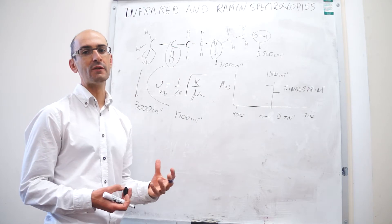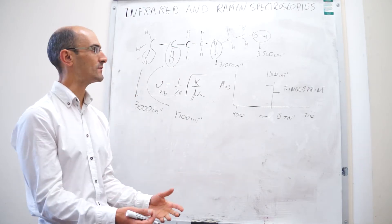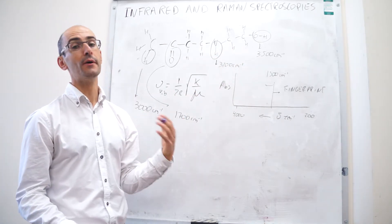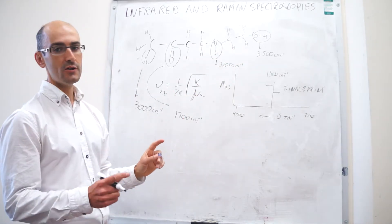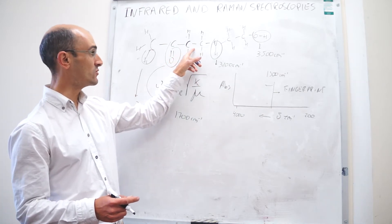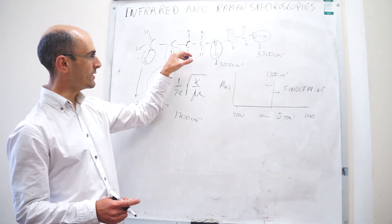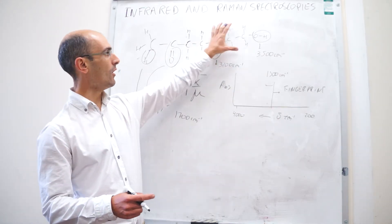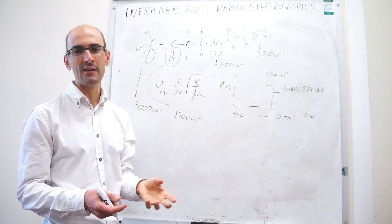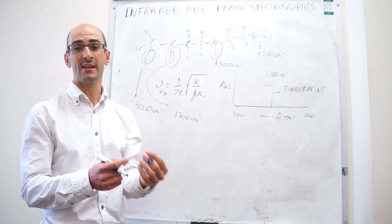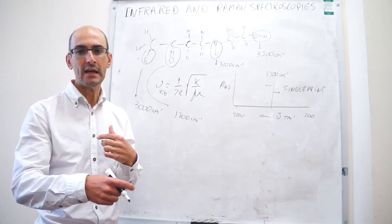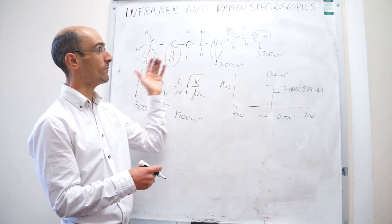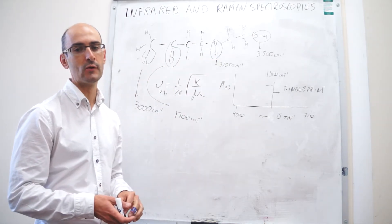Now, this technique is not going to be very useful in telling you the specific connectivity of the atoms. Notice that you have CH2s here and CH2s there. It's going to be impossible with infrared spectroscopy to tell exactly that you have two CH2 groups between a carbonyl and NH, another two between the NH and the OH. All of these groups will appear at about the same frequency, and it will be very difficult to tell exactly how many you have and what the connectivity is.